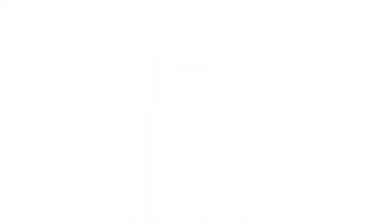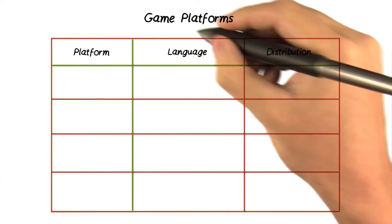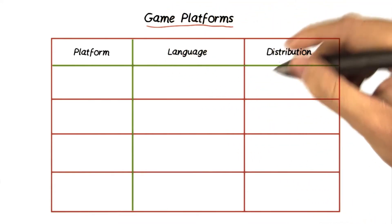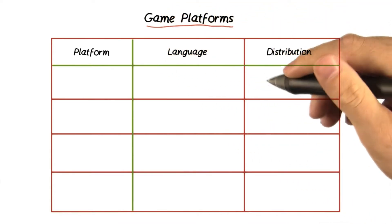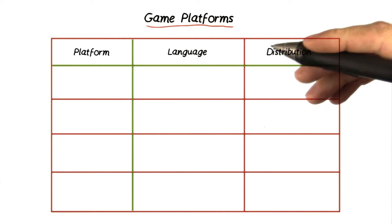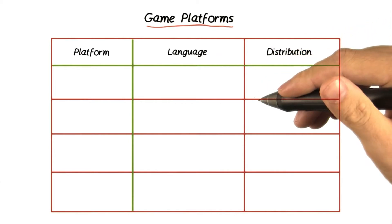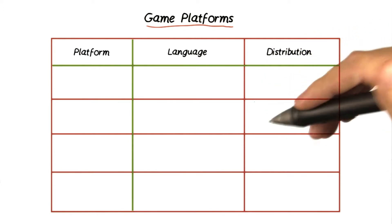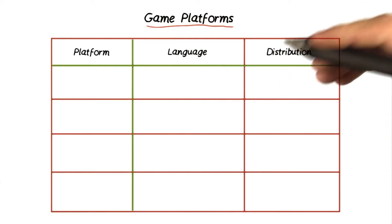But there's also mobile phones running primarily Android and iOS. There's desktop computers running Mac, Windows, and Linux. And, of course, there's the bane of middle school productivity, browser-based games.